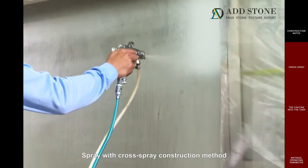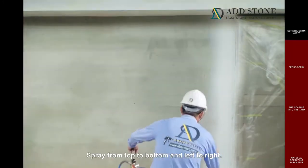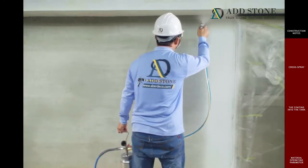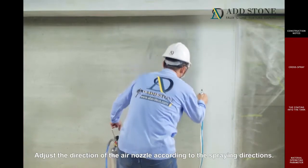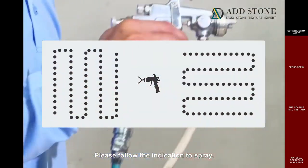Spray with cross spray construction method with 2.5 millimeter compressor spray gun. Spray from top to bottom and left to right. Spray with an S pattern. Adjust the direction of the air nozzle according to the spraying directions. Please follow the indication to spray.